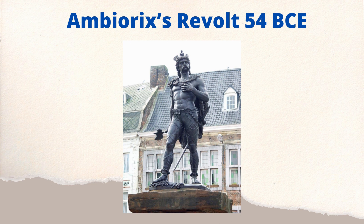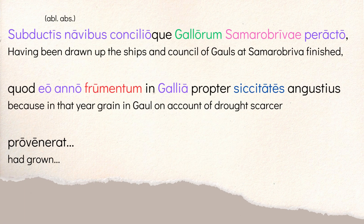Ambiorix later tries the same trick on Quintus Tullius Cicero's camp, but it doesn't work. In the end, Caesar rushes back to put down the revolt. Now we're going to look at the narrative itself. If you haven't done the things mentioned — vocab, pre-reading — pause the video and go do them. Otherwise, let's dive in. Your translation doesn't have to be exactly like mine, but it should give you a sense of what's going on.